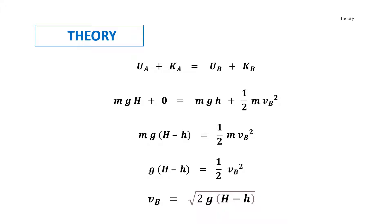At point B, where the bob starts moving in projectile motion, the energy equation includes one-half of the mass times the velocity at point B squared. This results in the velocity at point B — the velocity of the projectile along the x-axis — being equal to the square root of two times the acceleration due to gravity times the difference between the height of release and the height of the blade.